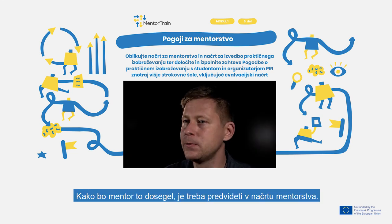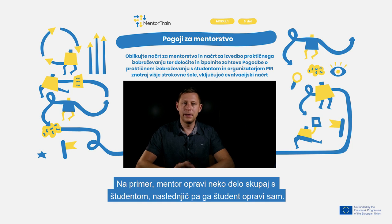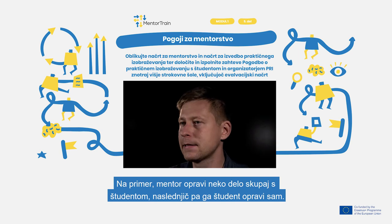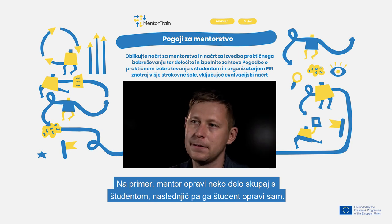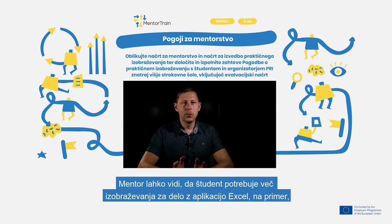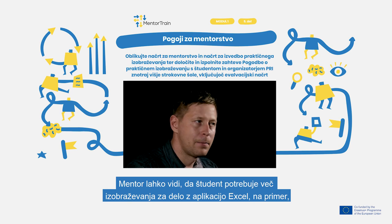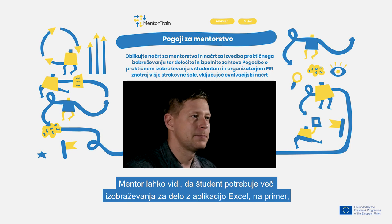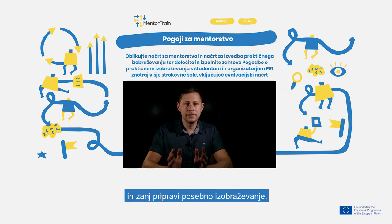How the mentor will do that must be included in the mentoring plan. For example, the mentor does some work together with the apprentice, and next time the apprentice will do that alone. Or the mentor can already see the apprentice needs some training — for example, working with Excel — and will arrange a special training for the apprentice.